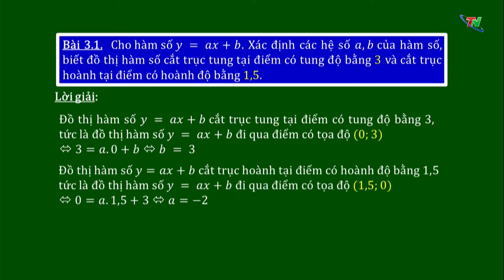Đồ thị hàm số Y bằng Ax cộng B cắt trục hoành tại điểm có hoành độ bằng 1,5, tức là đồ thị đi qua điểm (1,5; 0). Thay vào hàm số ta được 0 bằng A nhân 1,5 cộng 3, biến đổi tương đương ta tính được A bằng âm 2. Vậy A bằng âm 2, B bằng 3.